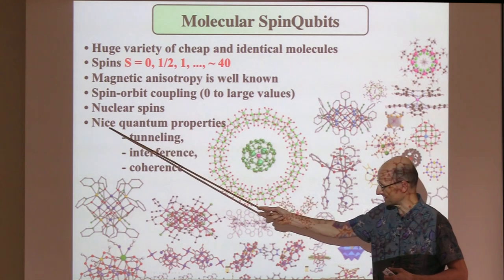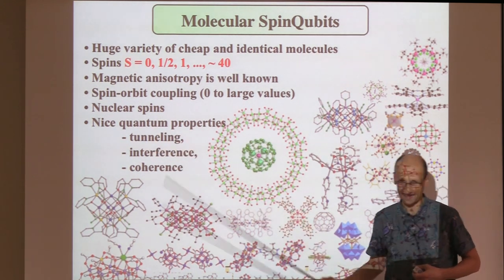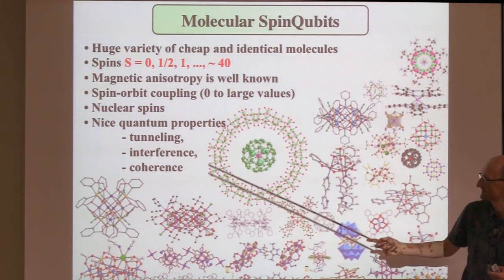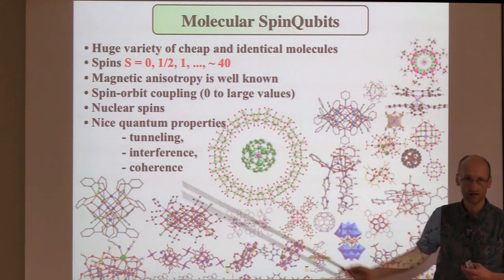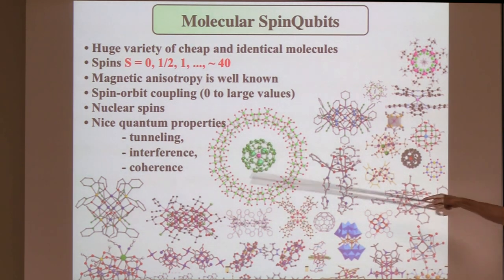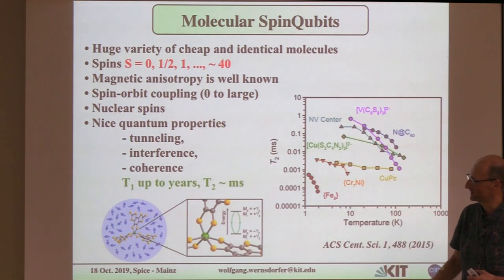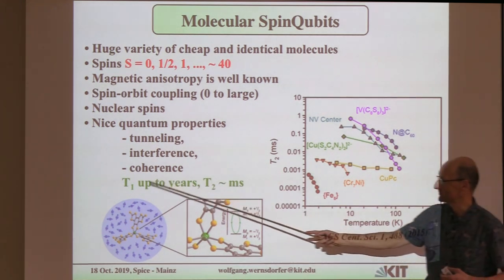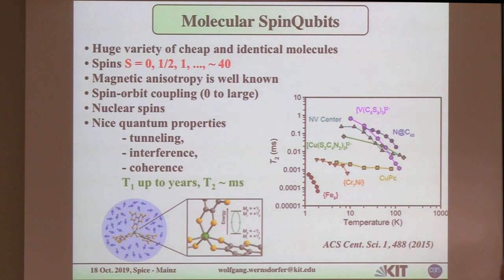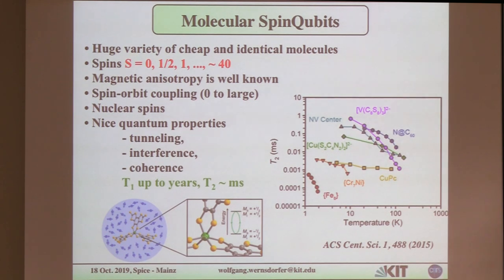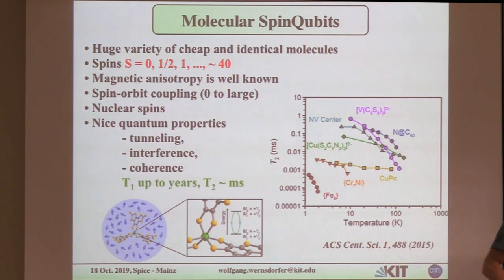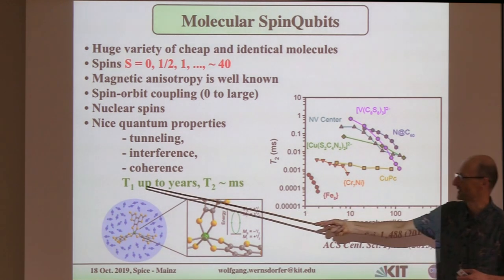In terms of quantum properties, you can have tunneling between different quantum states, quantum interference, and quantum coherence. All these keywords summarize a huge activity which I won't present in detail. I want to squeeze this down to two numbers. T1 tells you how long such a spin is stable in a state; at low temperature, systems can be very stable — you can get very long T1s, which is an important feature relative to other quantum technologies.